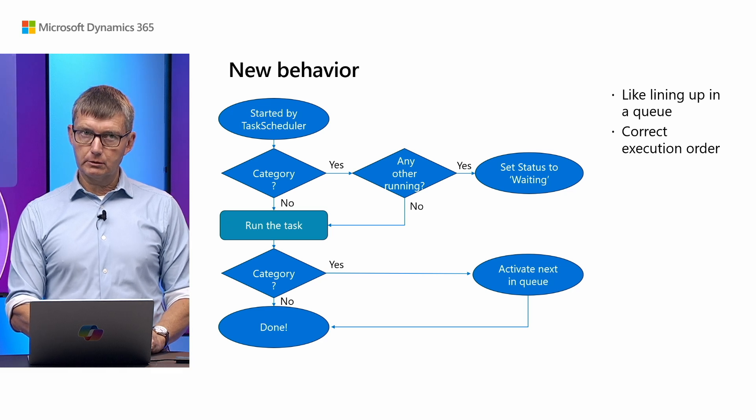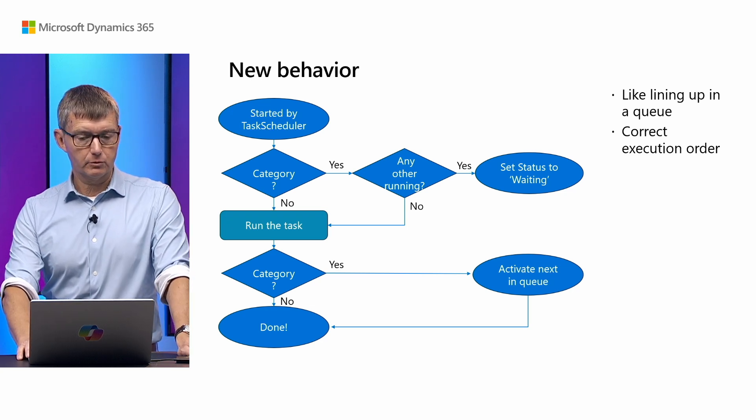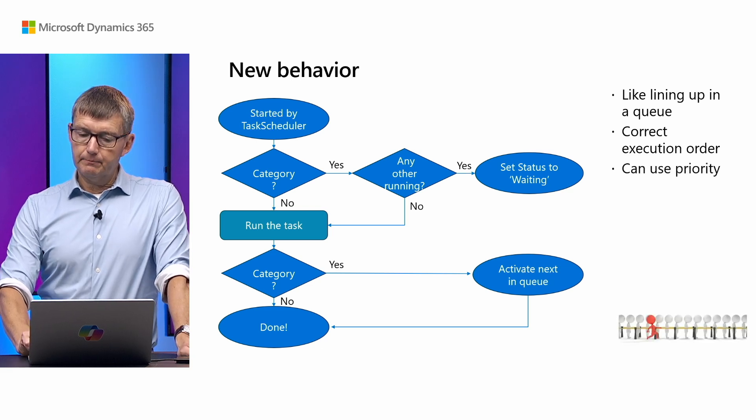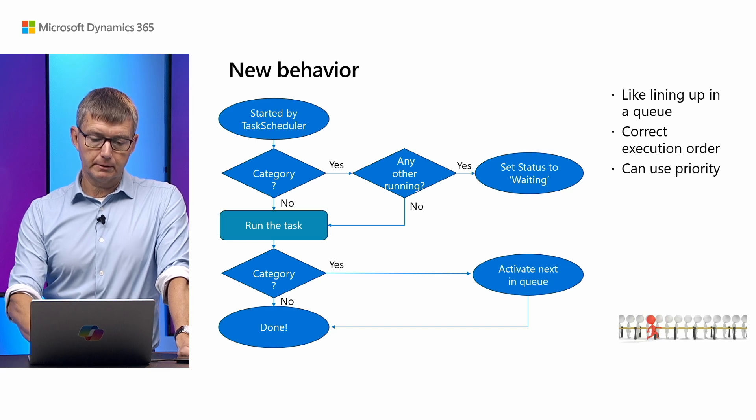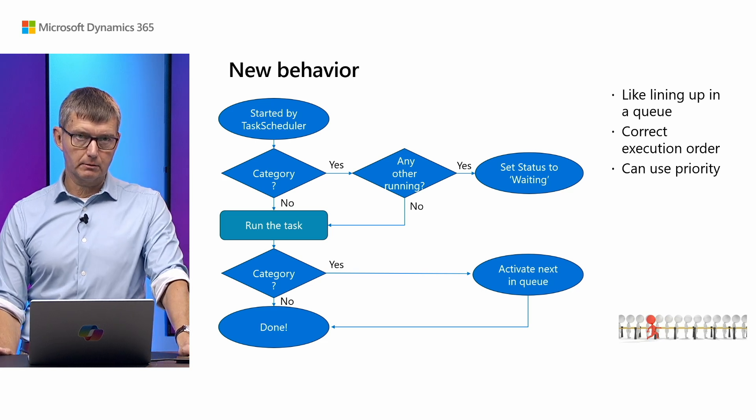We also get the correct execution order, because you hold a number in the queue — first in, first out. And since we pick the next number from the queue, we can introduce priority and allow someone to skip the queue. We had a customer with a lot of sales and purchase postings, each with thousands of lines, so each order would take minutes. Sometimes half an hour's worth of jobs would be queued up. But if something very urgent came in — maybe a truck was waiting outside — they needed to prioritize it. That's why we introduced priority within the category.